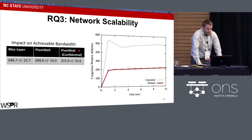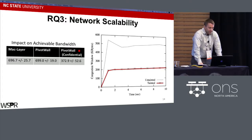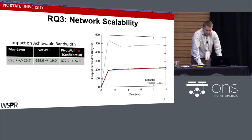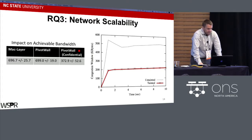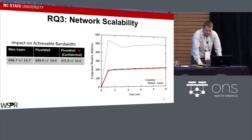We also evaluated PivotWall's performance against a simple MAC layer controller-switch that matched traffic on a layer two protocol, using the iPerf3 toolkit to measure total achievable bandwidth, jitter, and the effect on the TCP congestion window. Unlabeled PivotWall traffic and MAC layer traffic showed similar performance. However, labeled traffic — traffic that has touched confidential information — is limited to 53% of achievable bandwidth, primarily due to the impact on the TCP congestion window growth.